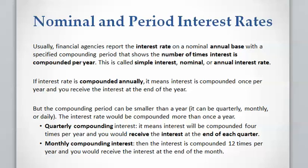If the interest rate is compounded annually, it means the interest rate is compounded once per year. If the interest rate is compounded quarterly, then the interest rate is compounded four times a year. And if interest rate is compounded monthly, it means interest rate is compounded 12 times a year.